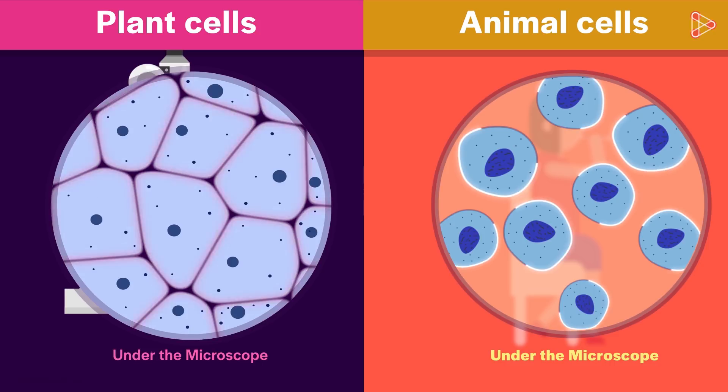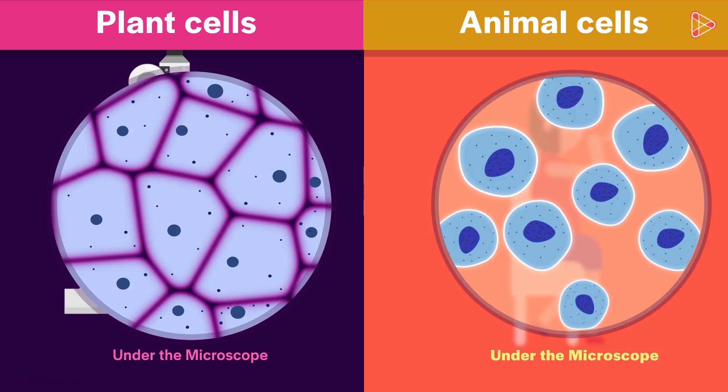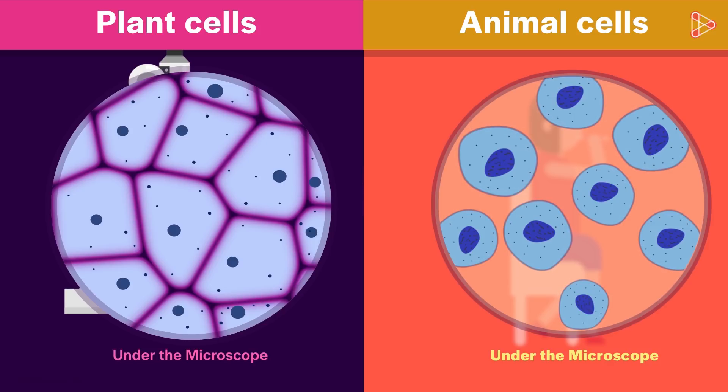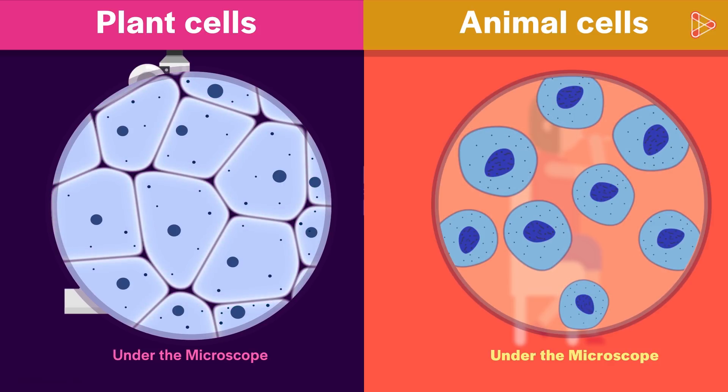Roughly, we have these thick distinct borders that differentiate each cell from the other one. Then we have these thin tiny dark spots scattered all over. Also, we can spot this prominent circular structure here which is very darkly stained.